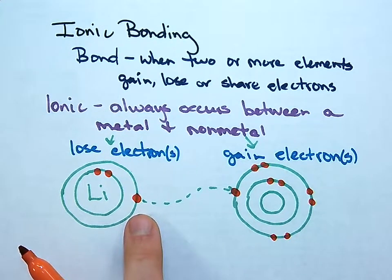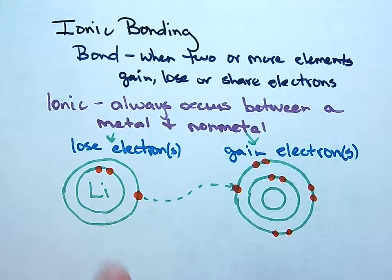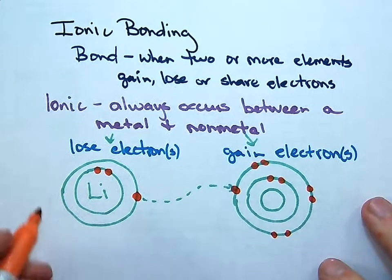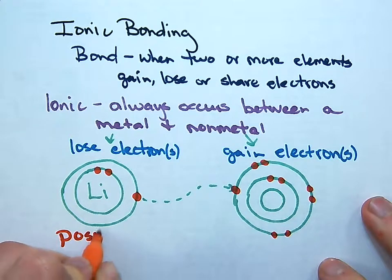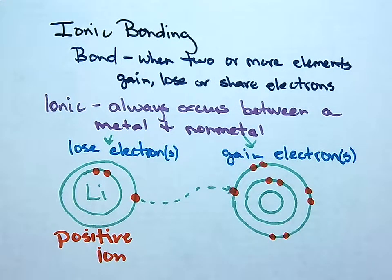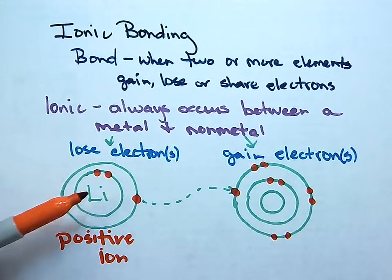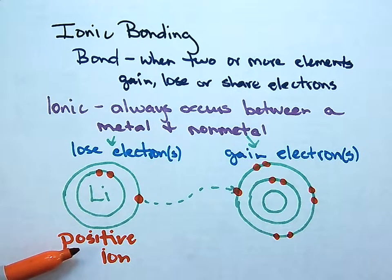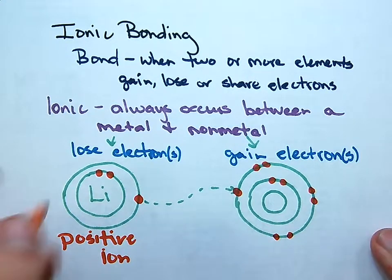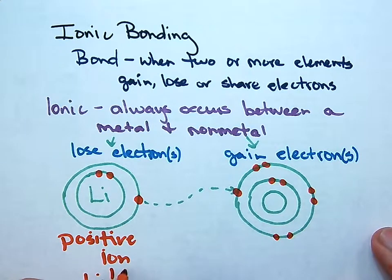Since lithium lost one electron, it lost one negative charge, meaning its charge went up by one. This lithium is left as a positive ion because it lost negative charge. Lithium has three protons and now only two electrons, so it's positive. We would write this as lithium 1+. That would be the ionic charge.